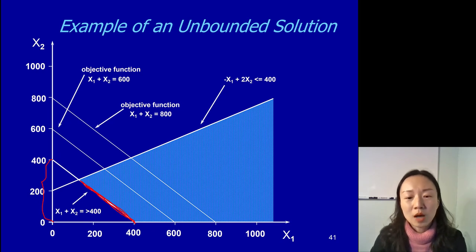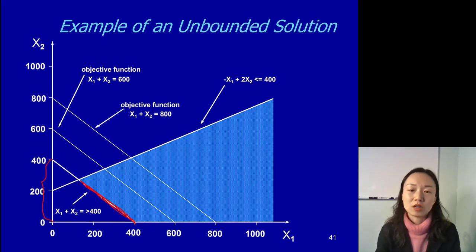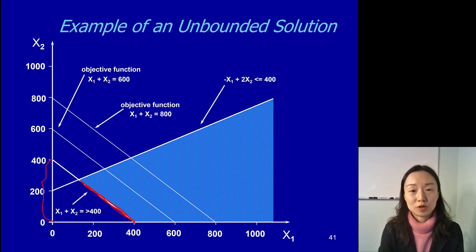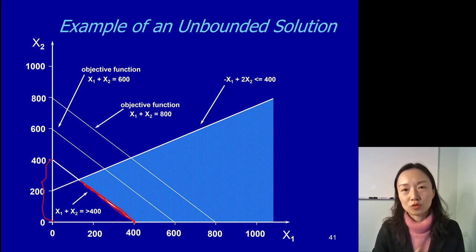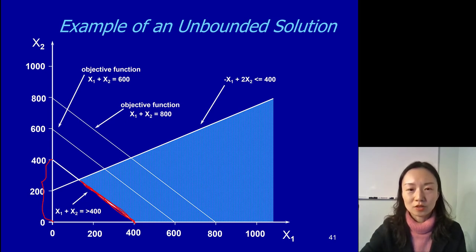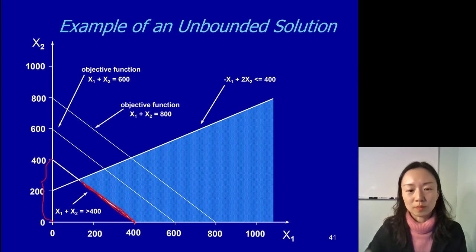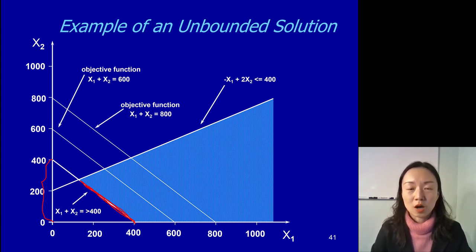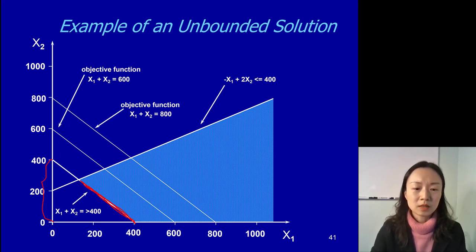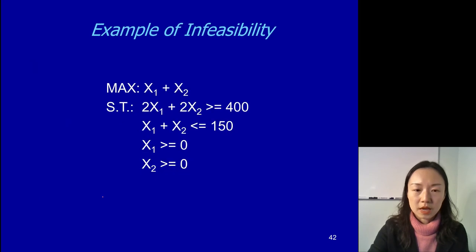So you see, whether a problem is unbounded or not really depends first on its feasible region — if the feasible region goes in a certain direction without another constraint defining the edge or corner points — and second, it depends on whether the objective function is being maximized or minimized.